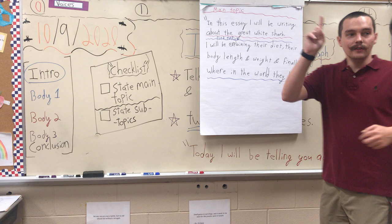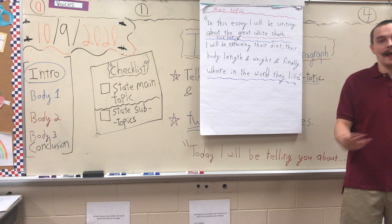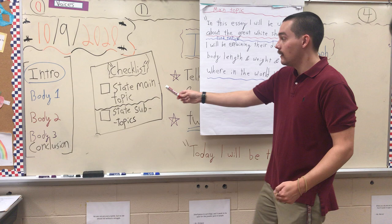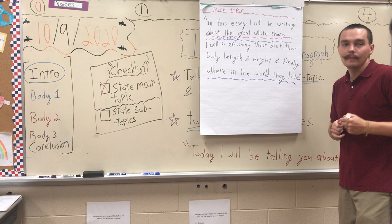Sentence number one: 'In this essay, I will be writing about the great white shark.' Boom. First sentence done. I'm halfway there. I've given my main topic, which is the great white shark. So if you look over at my checklist — state my main topic — I can knock that off the list. Now listen to my next sentence: 'I will be explaining their diet, their body length and weight, and finally, where in the world they live.'